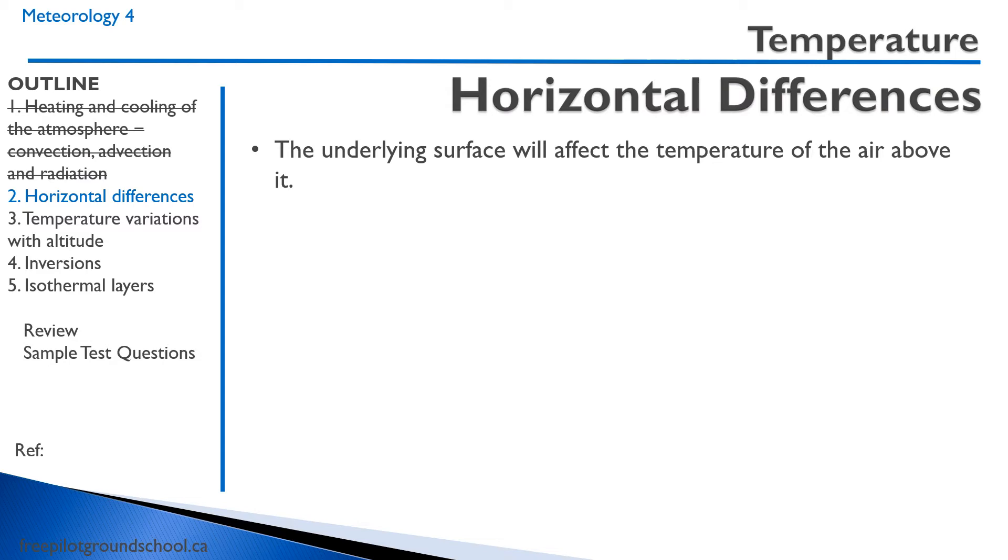Obviously, there are horizontal differences with temperature. Some areas are warmer than others. And typically, the reason for that is that the underlying surface will affect the temperature of the air above it. So air over a cold ocean will be colder than air over a hot desert. Should be pretty obvious.